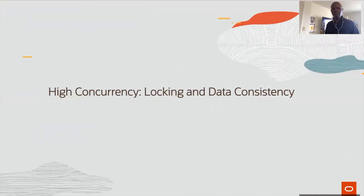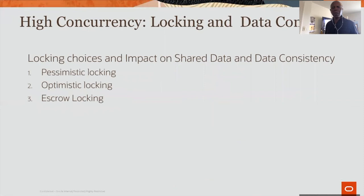The second challenge I want to talk about is high concurrency — what are the impacts in terms of locking on data consistency? There are three locking mechanisms known in the industry. What is the impact on shared data and data consistency? The three techniques are: pessimistic locking, optimistic locking, and escrow locking.